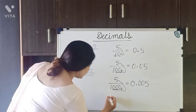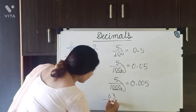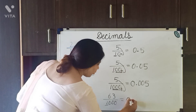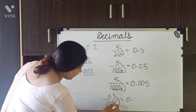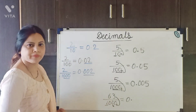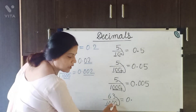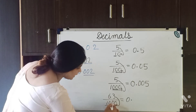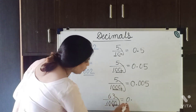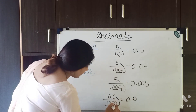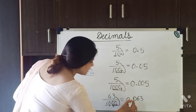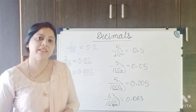Now suppose it is 63 upon 1000. The 1 becomes 0 and we give a decimal point. The digit 3 goes at the last position and 6 goes at the second last position. Since 63 occupies 2 of the 3 places, one 0 remains and is written before 63. So it becomes 0.063.